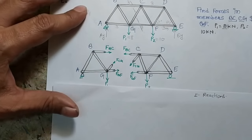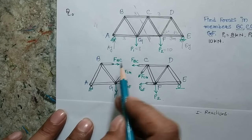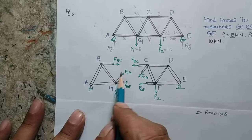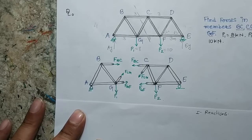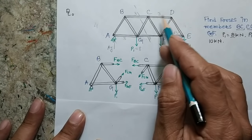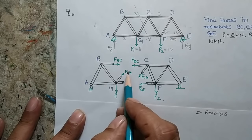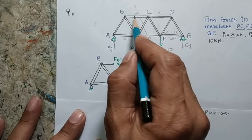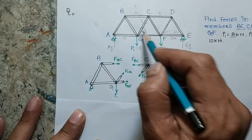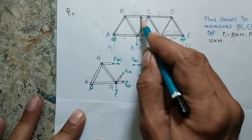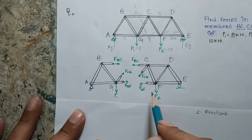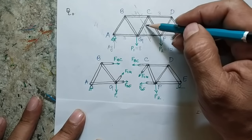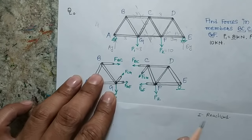As I cut the truss at those three members, I must put a force at each cut location and an equal and opposite force on the other side to keep the system in equilibrium. Both sections should remain in equilibrium. To maintain equilibrium, I apply the same forces that were present in the original members. These internal forces become external forces when I cut the truss, and the member must be replaced with those equivalent external forces.